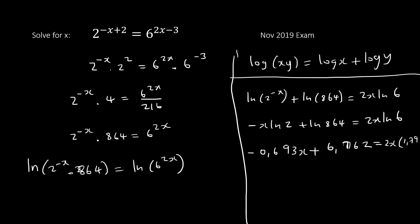Substituting values: ln2 ≈ 0.693, ln864 ≈ 6.762, ln6 ≈ 1.791. I have −x·0.693 + 2·0.693 = 6.762 + 2x·1.791. Grouping x terms and solving, I get x ≈ 6.762 / 4.275 ≈ 1.582. This is the answer, but the method was long — let me show you the easy way.